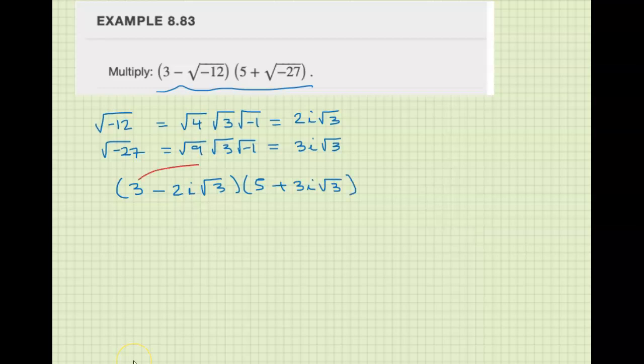So we're going to FOIL. We have 3 times 5 is 15. 3 times 3i square root of 3 is 9i square root of 3. This one is going to be negative 10i square root of 3.